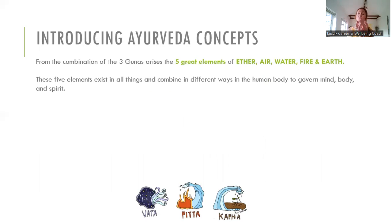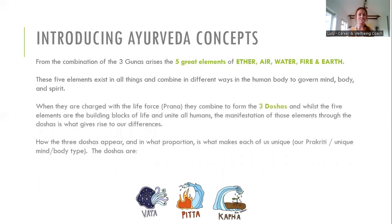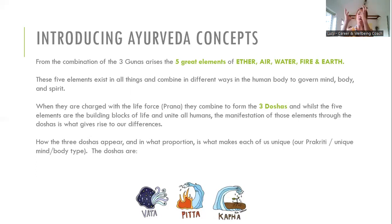These five elements exist in everything, including us, but they can be in various amounts — and this is what governs our mind, body, and spirit. When these five elements are charged with something called Prana, which is the life force — if you practice yoga you might have heard of Pranayama — Prana combined with the five great elements gives us something called the three Doshas, and this is really what we're going to talk about today.